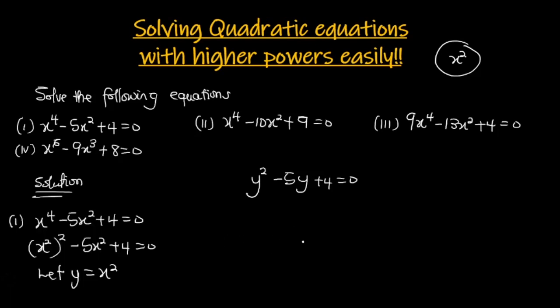We factorize y² - 5y + 4 = 0. We take the coefficient of y², which is 1, and multiply by 4 to get 4. We need two numbers that multiply to give 4 and add to give -5. Negative 4 and negative 1 work: (-4) × (-1) = 4 and (-4) + (-1) = -5. So we rewrite as y² - 4y - y + 4 = 0.